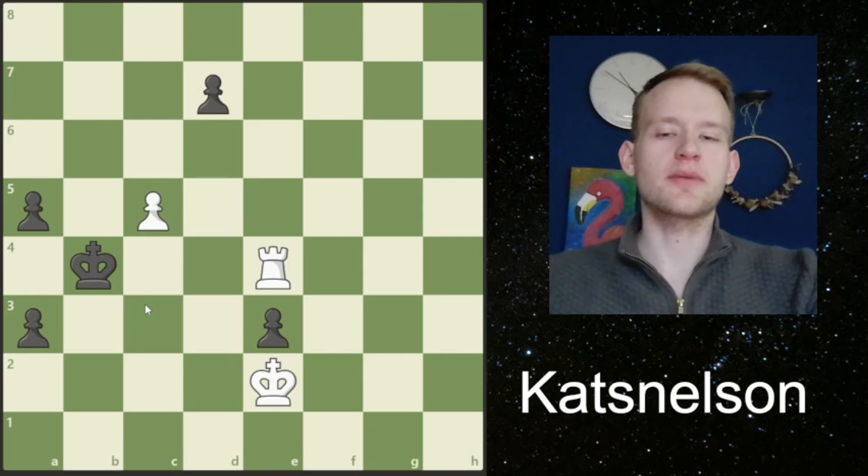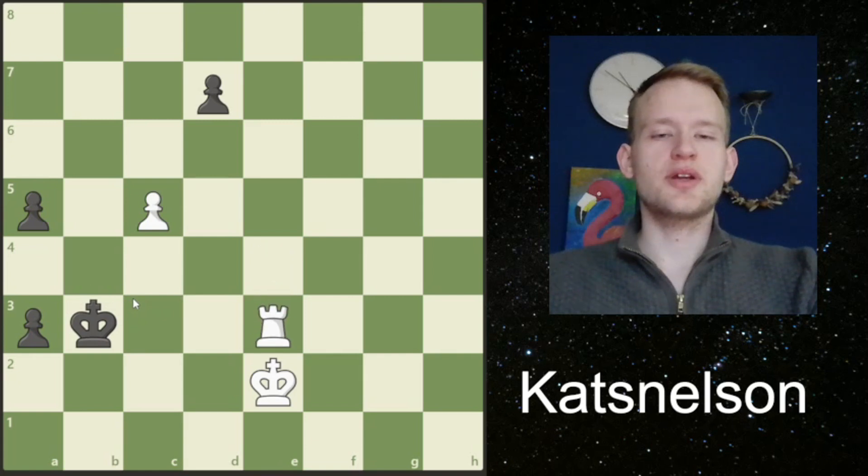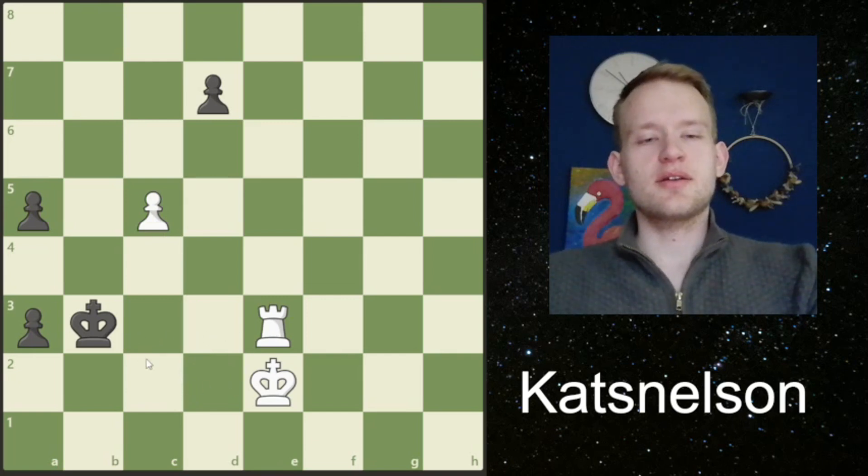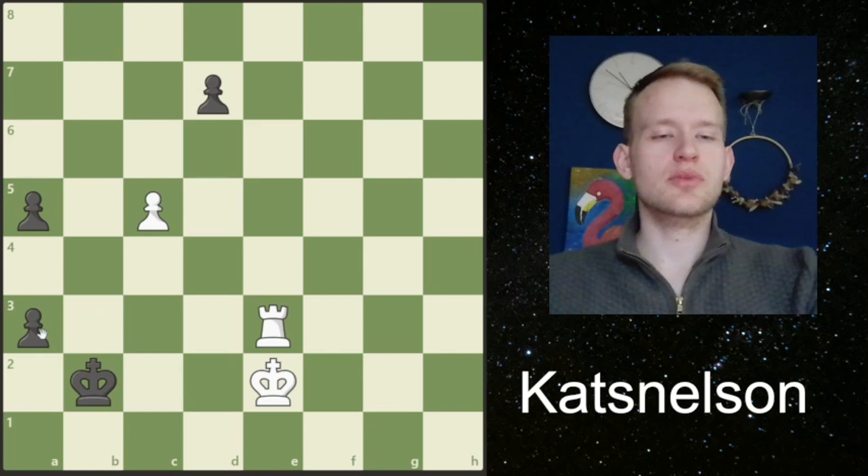In this position black would play king to b3, probably. We take the e3 pawn now with check. Now you can see, in comparison to taking the pawn on e3 in one go, we've now managed to advance at least our c pawn to c5. After this check, black is going to play king to b2, keeping the pawn defended while obviously not blockading it.